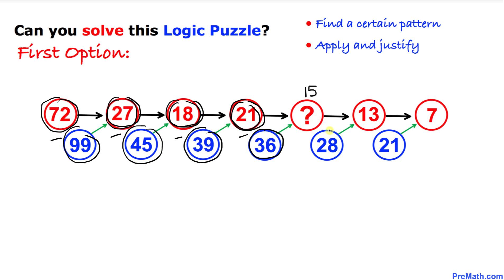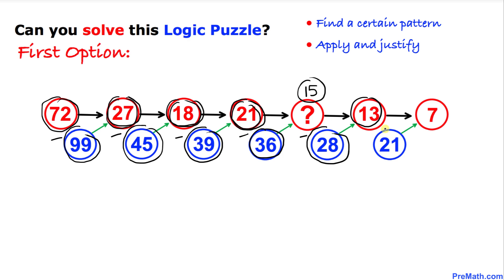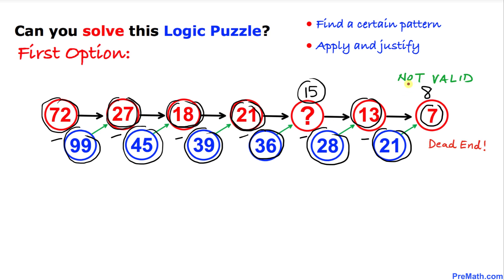Let's keep moving forward. The next step, we're going to put 28 minus 15. That's going to give us indeed 13. And now let's subtract 21 minus 13. 21 minus 13 is 8, and this number over here is 7. So that means these two numbers are different. They are inconsistent. That means this approach is not valid because we hit a dead end. This number 15 is not the correct answer.